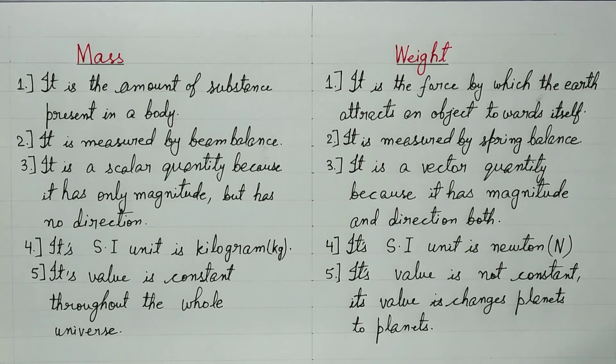For example, on Earth the object has a weight of 600 N. So on Moon it's just 100 newton, because Moon's gravitational force of attraction is just one-sixth of Earth.